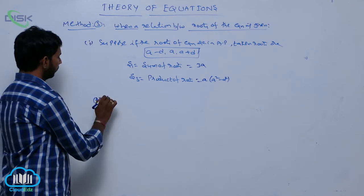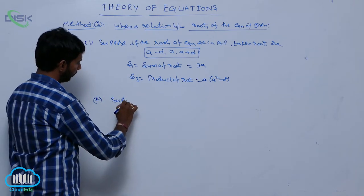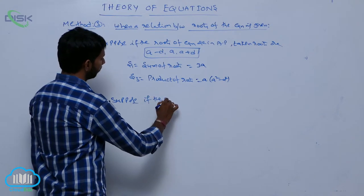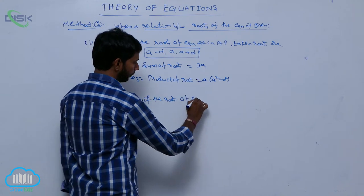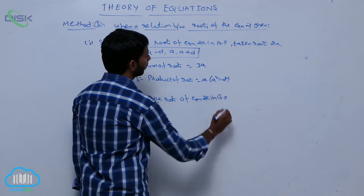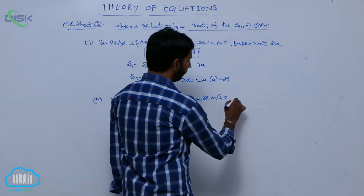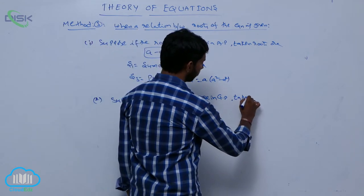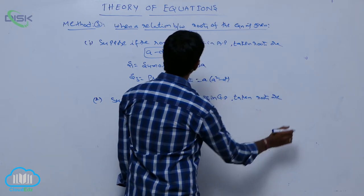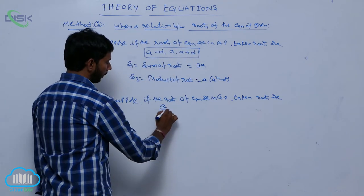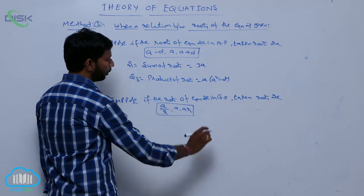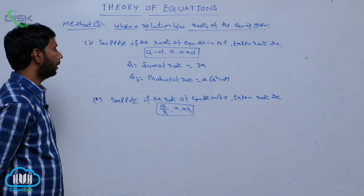Next, suppose if the roots of the equation are in GP. The roots are taken as A over R, A, and AR.